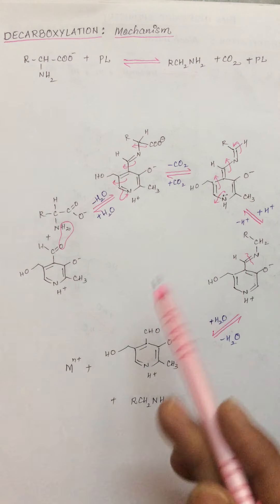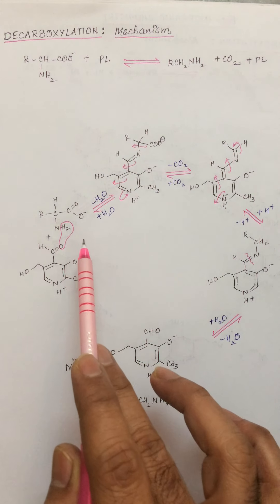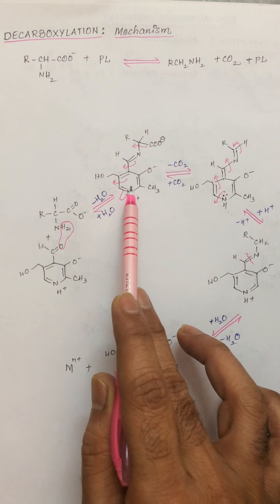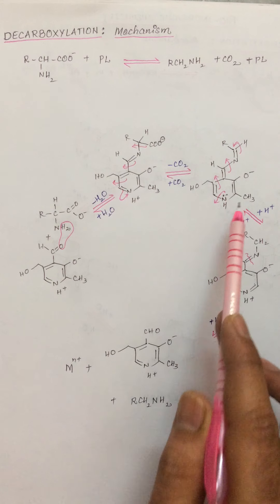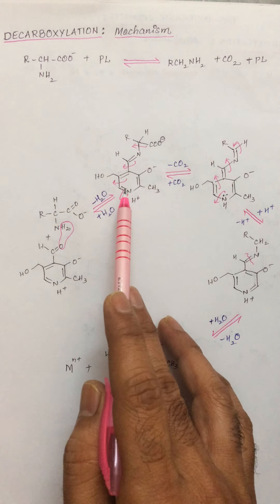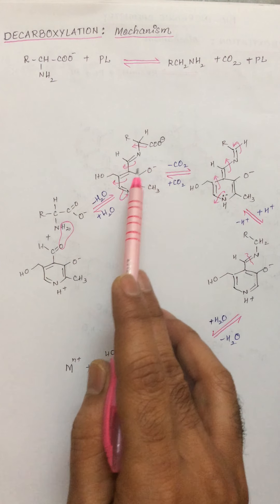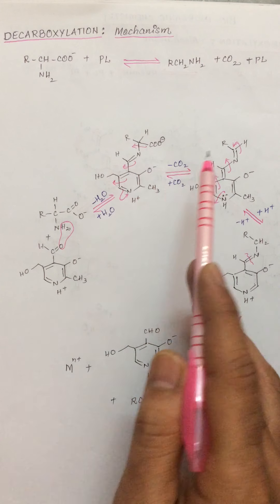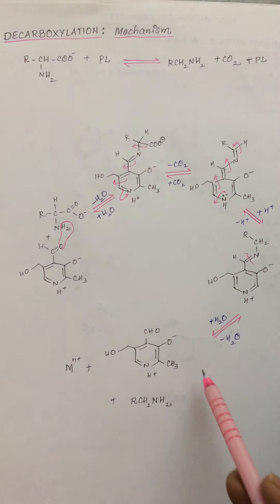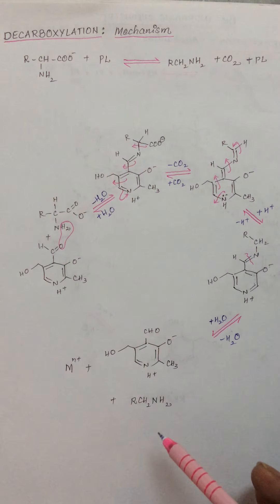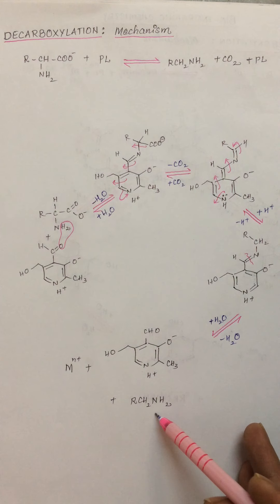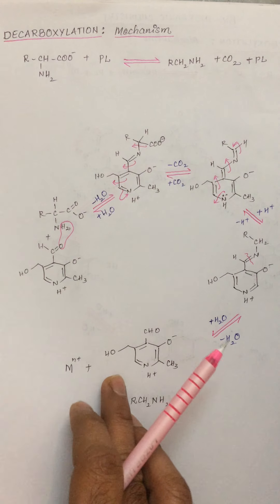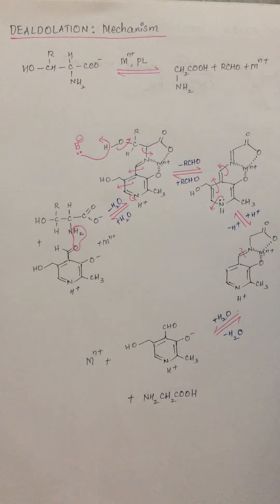The same reaction can also be seen in the absence of a metal ion. Taking the simplest example, there is no involvement of the metal ion, and therefore we find only one ring in the intermediates. In all cases there is only one ring, but once a metal ion is present, we can also see a second and a third ring.